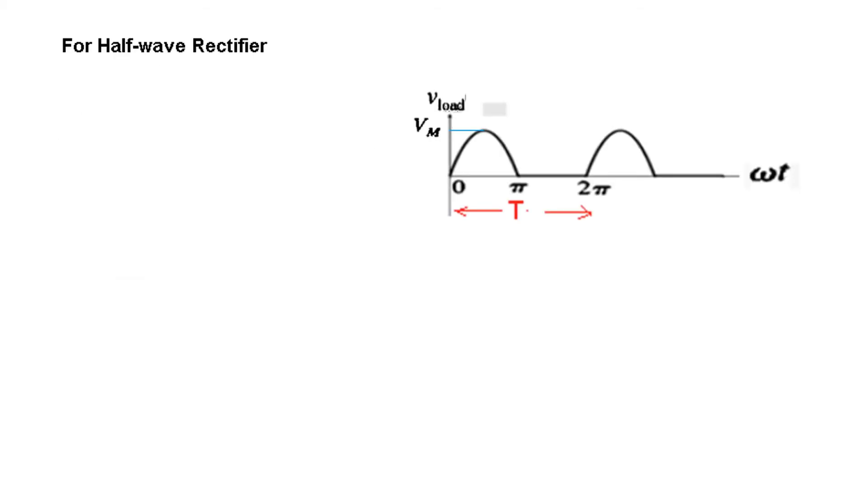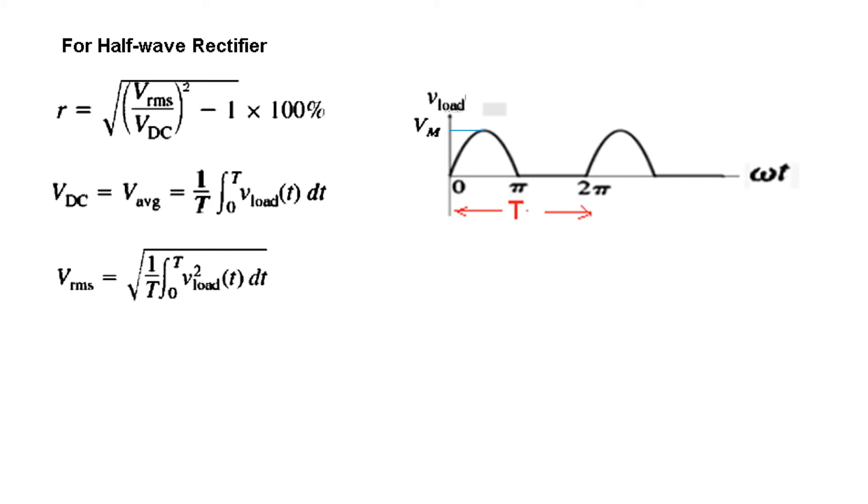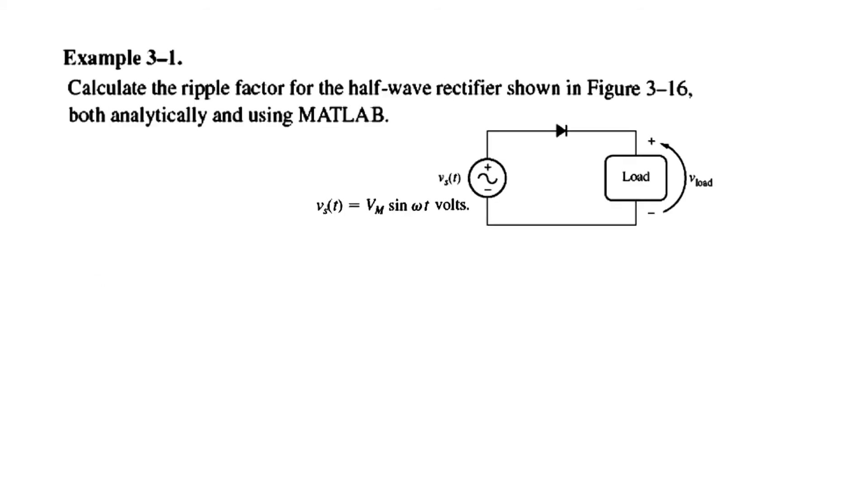Now, for the half wave rectifier, this is the circuit. The only thing we need to define here is the time period T. You can see, signal is starting from here, going all the way, and then going to 0. This point is the start of the next signal. So this is the time period T, which is 2 pi in this case. This formula will be used for the ripple factor. This will be used for the V_DC. And this is for V_RMS. Okay, now let's go to the question number, or example, 3.1.